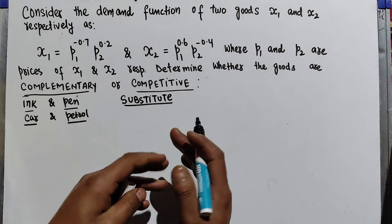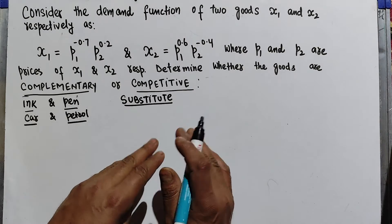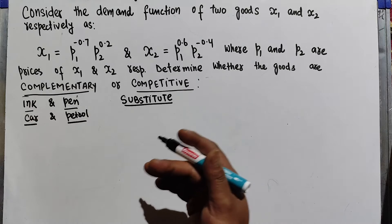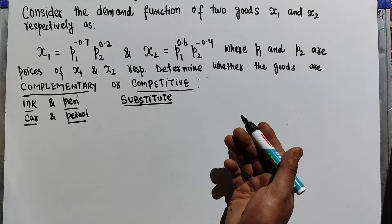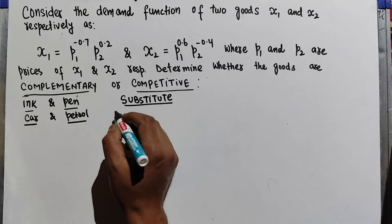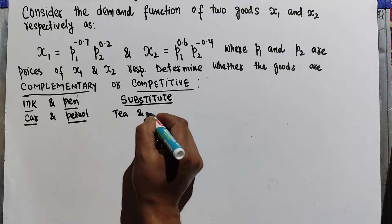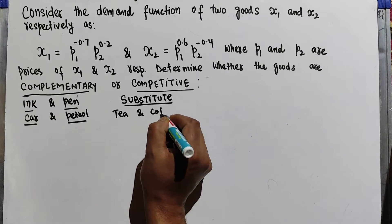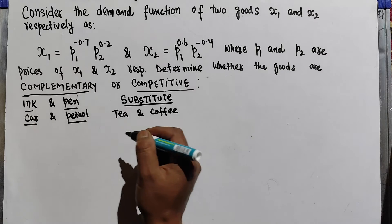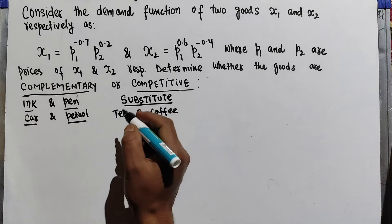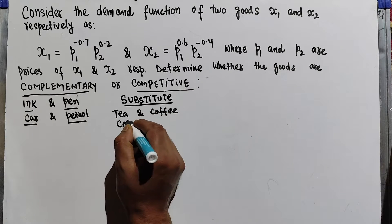Competitive goods are also called substitute goods. Two goods are said to be competitive or substitute goods when one good can be used in place of the other. Examples include tea and coffee, or coke and pepsi.